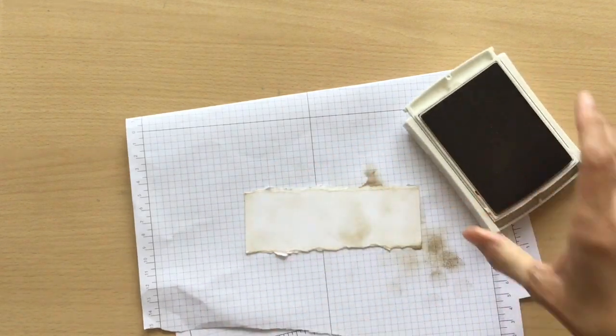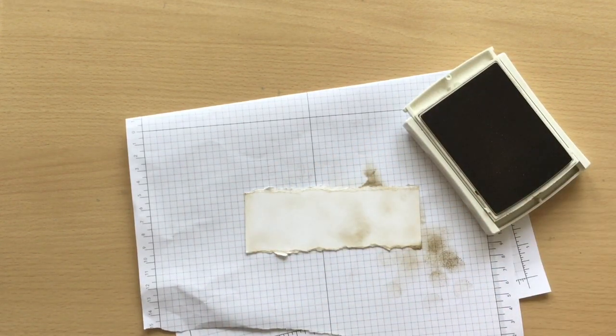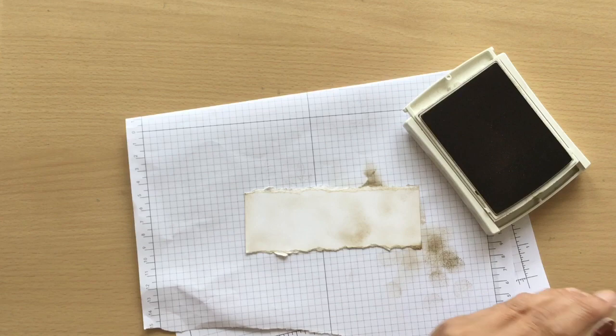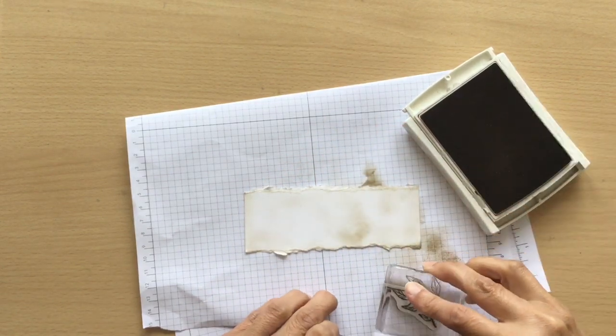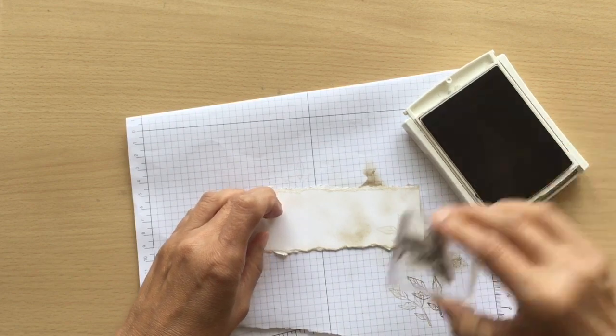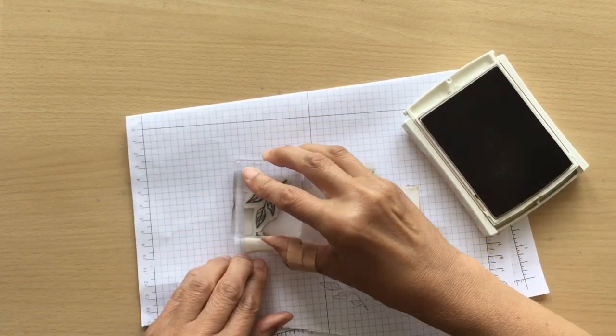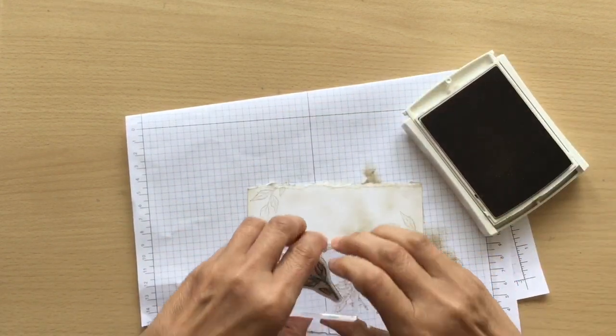And then I'm bringing in my crumb cake again and I'm using the little leaves. This is off the Free as a Bird stamp set. I'm stamping off and then stamping on. So this is just a background piece.